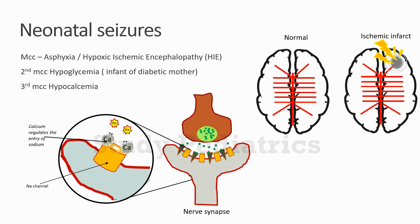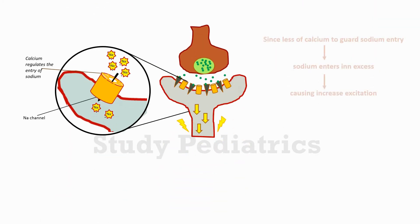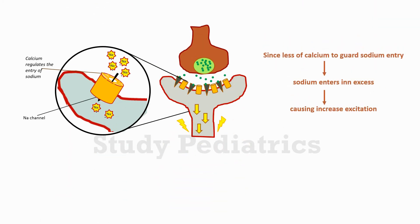As can be seen in the figure, calcium regulates the entry of sodium. This entry regulation prevents overexcitation of a cell. But if the blood has less calcium, then the sodium regulation is affected, resulting in more sodium entry and hence hyperexcitability. This hyperexcitability forms the basis of seizure generation.